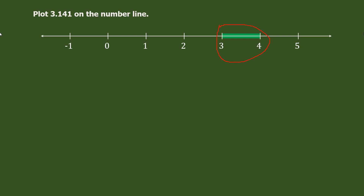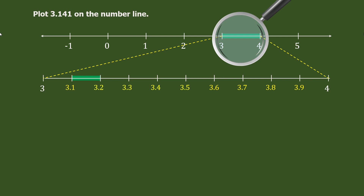To find the exact position, the need for magnification comes in. We magnify the region between 3 and 4 and divide it into 10 equal parts: 3.1, 3.2, 3.3, 3.4, and so on. Now focusing on the number 3.141 — it is greater than 3.1 and less than 3.2, so the number lies between 3.1 and 3.2.